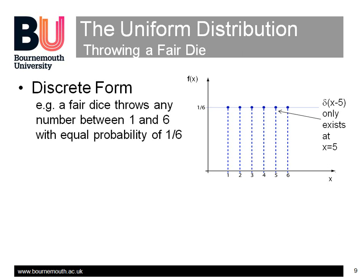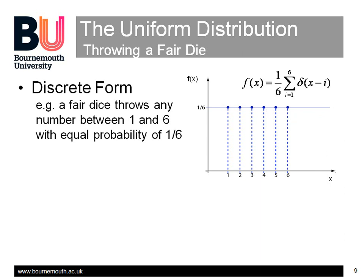The Dirac function has the property of only existing when the variable x equals i. For example, delta x minus 5 is the dot at x equals 5, delta x minus 4 is the dot at x equals 4, and so on. And we can represent the whole function as the sum of all the dots from x equals 1 up to x equals 6.